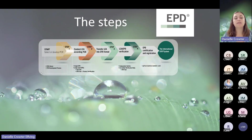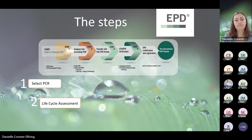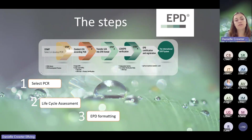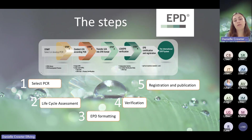There are five general steps to creating an EPD. I will go through each of the five steps more closely. The first step is to select which PCR needs to be used for your product. The second step, and the largest step, is the life cycle assessment. Thirdly, you should format the EPD — create the document that will be the end product. The fourth step is the verification step. And last but not least, you should register the EPD with the program operator, and it will be published once everything is okay.